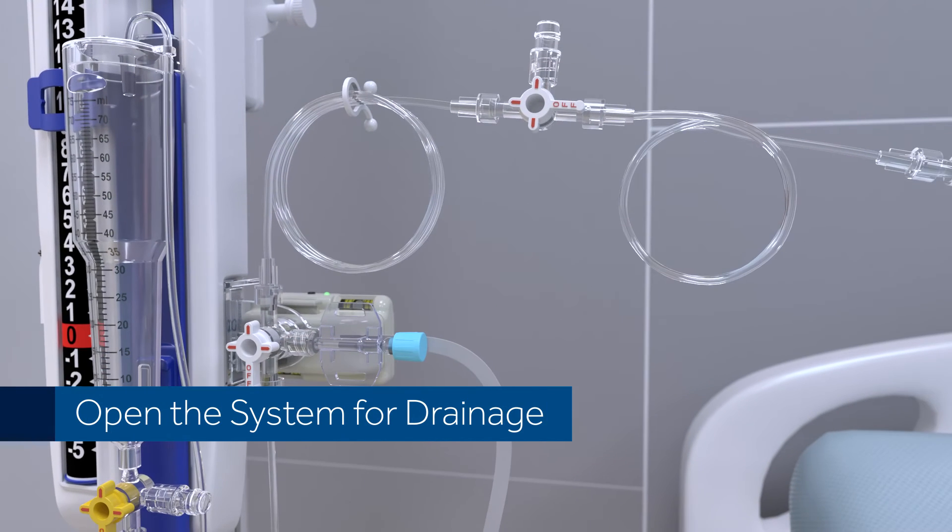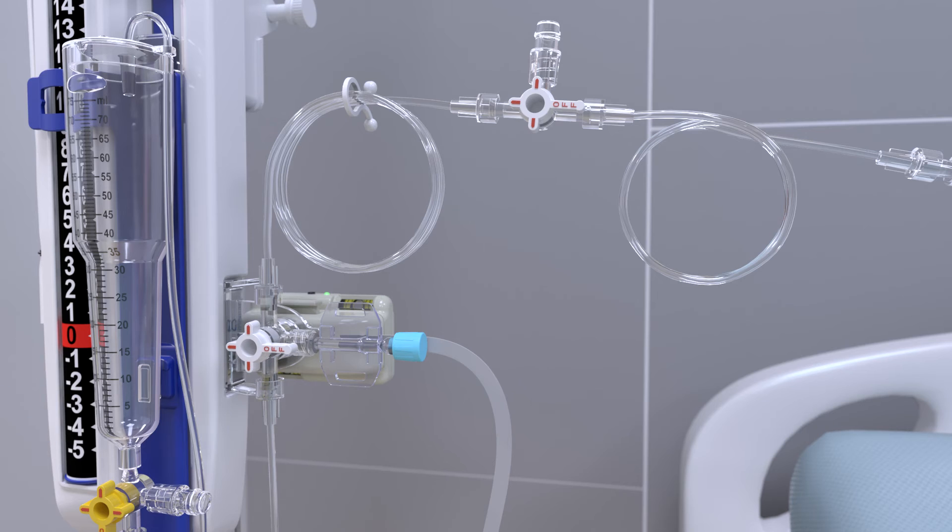Once setup is complete, the system can be open to drainage. Rotate the patient line at main system stopcocks so fluid can flow from the patient to the drip chamber.